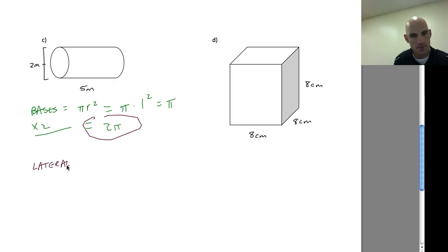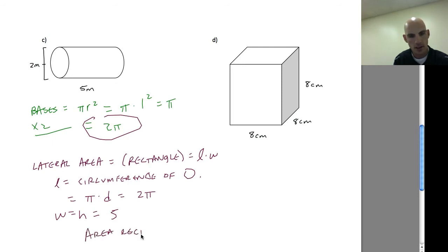And my lateral area, which is a rectangle, equals length times width or base times height. So my length is equal to circumference of circle. So that's equal to pi times diameter, so that's equal to pi times diameter equals 2 pi. And my width is equal to my height, which is equal to 5. So area rectangle equals 2 pi times 5 is 10 pi.